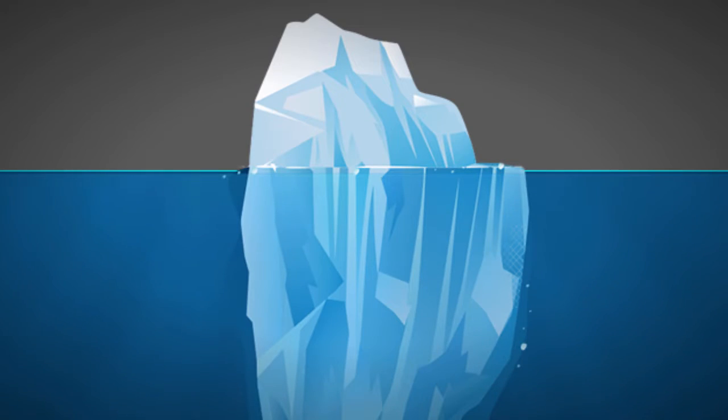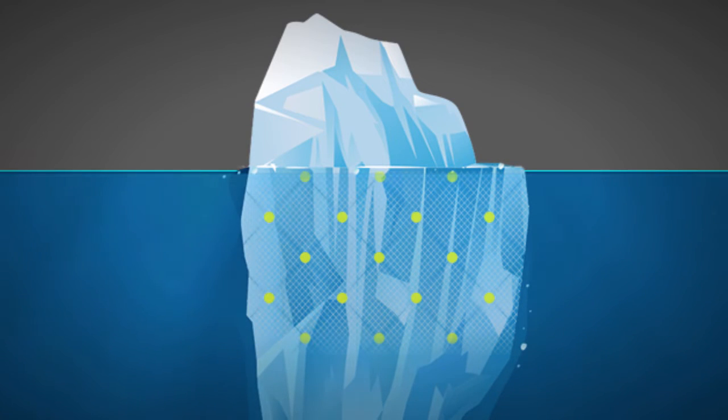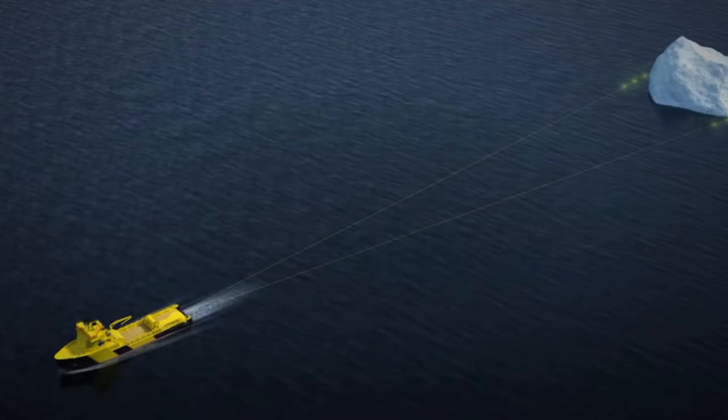The plan would be to wrap an insulated material around the waterline of the iceberg and then pull the berg with the help of a massive tugboat.